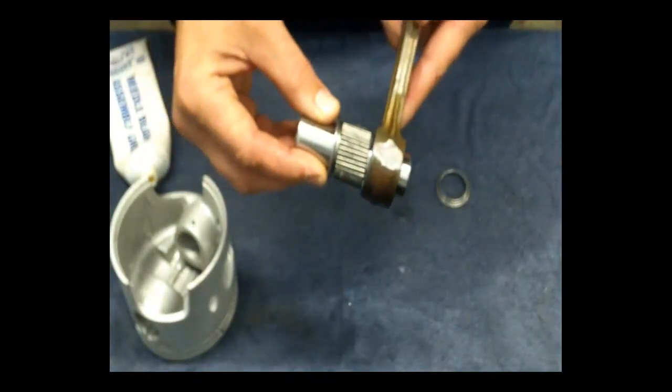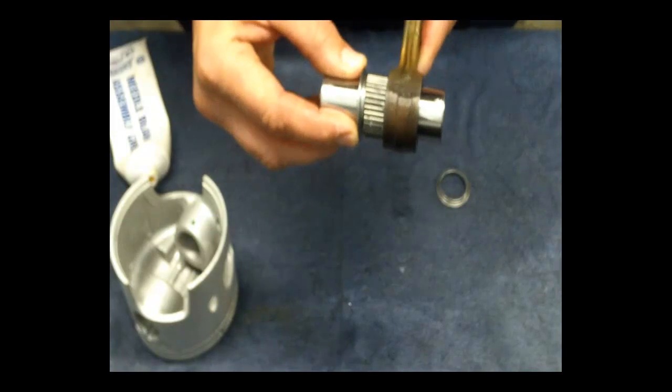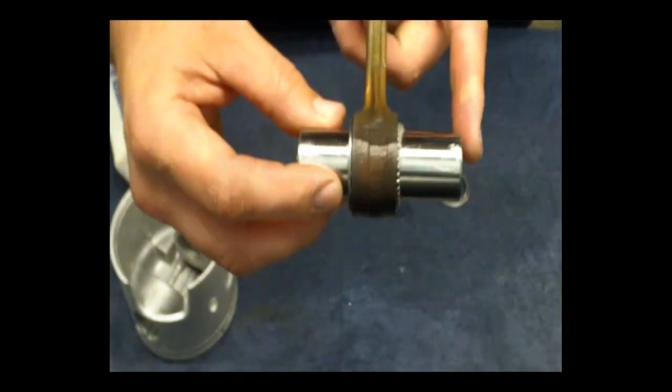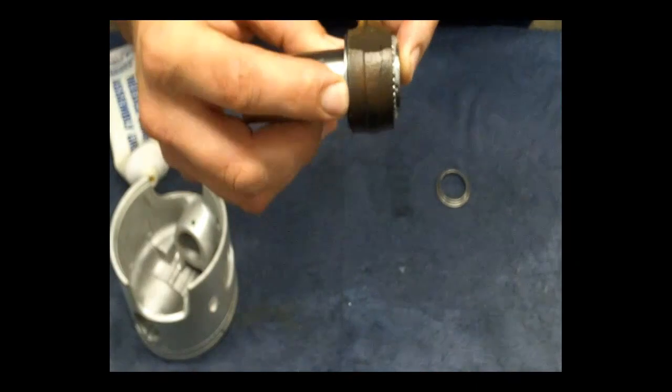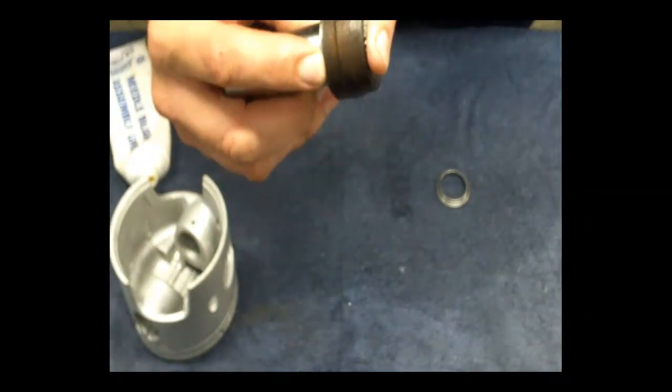So it helps install the wrist pin into the connecting rod. Hold the washer with your fingers and push the wrist pin out. Wipe off any excess grease.